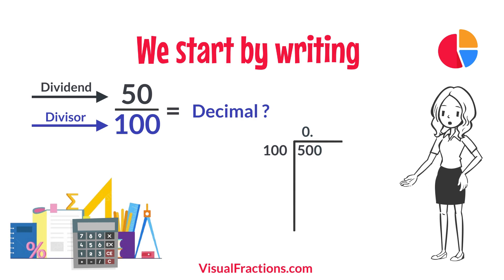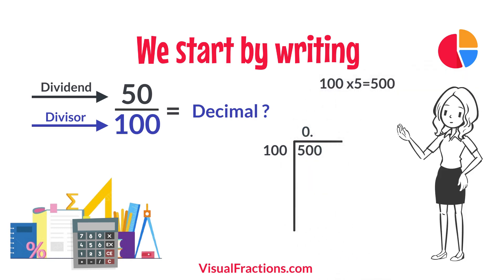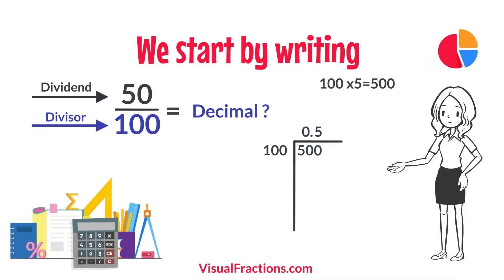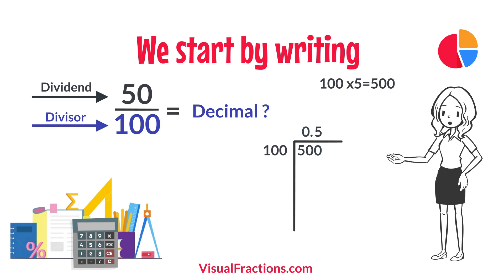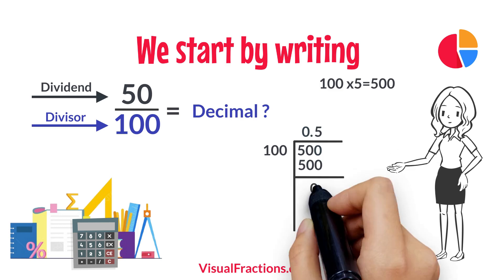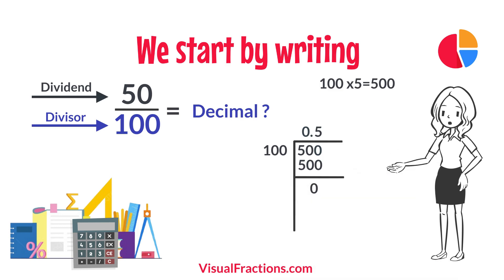How many times does 100 go into 500? Exactly 5 times. We write 5 after the decimal point in the quotient, making it 0.5. Multiplying 5 by 100 gives us 500. When we subtract 500 from 500, we get a remainder of 0.